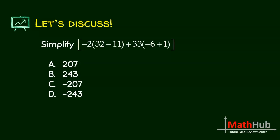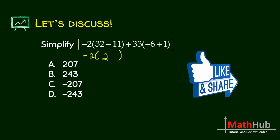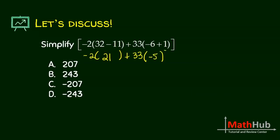Next, you have parentheses here. We perform the operations inside the parentheses. This is negative 2 times 32 minus 11, that is 21, plus 33 times negative 6 plus 1 is negative 5.